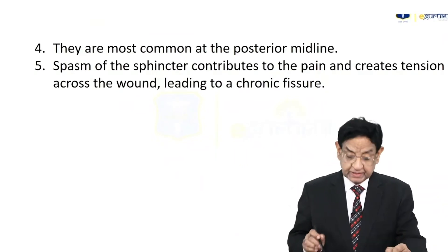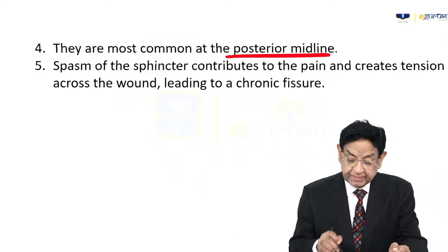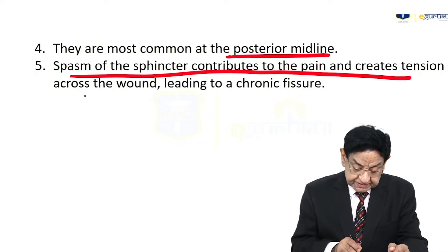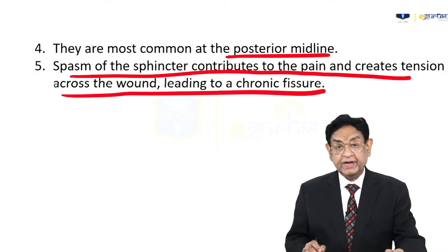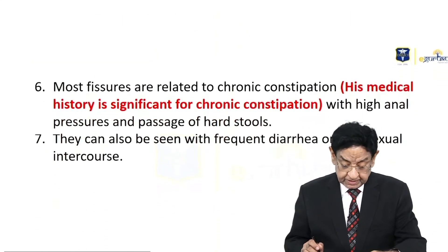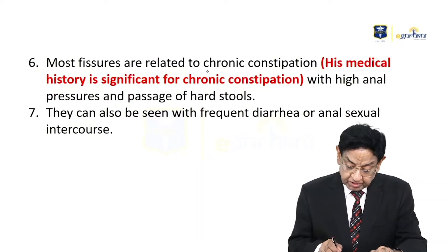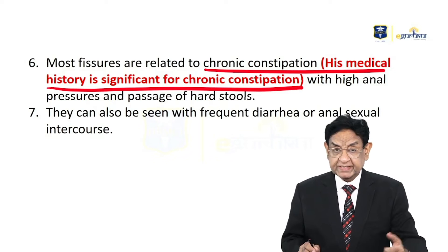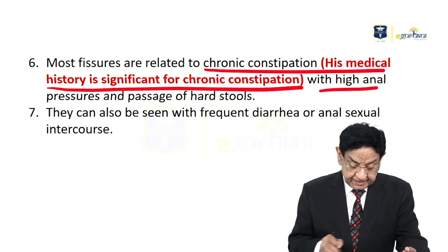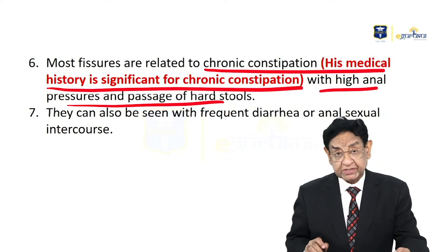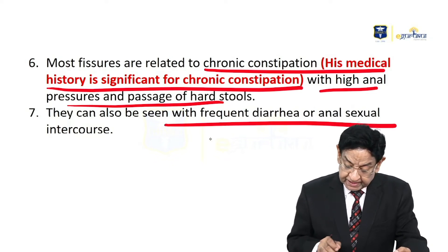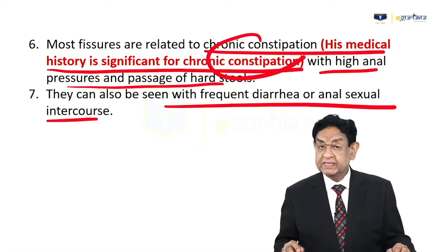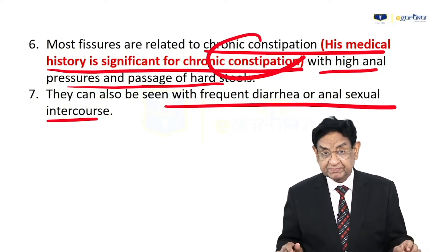Anal fissures occur in the posterior midline. Spasm of the sphincter contributes to the pain and creates tension around the wound, leading to a chronic fissure. Most fissures are related to chronic constipation — as in our patient — with high anal pressure and passage of hard stool. They can also be seen with frequent diarrhea or anal sexual intercourse.